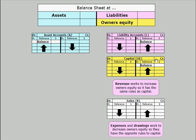Increases in equity accounts are shown by credit entries. So the rules for assets are the reverse of the rules for liabilities and capital. Think about the balance sheet — assets have opposite rules to the equity accounts. Revenue works to increase owner's equity, so the double entry rules apply the same way to sales as they do to capital. To increase sales, it's a credit entry, just like an increase in capital is a credit entry.